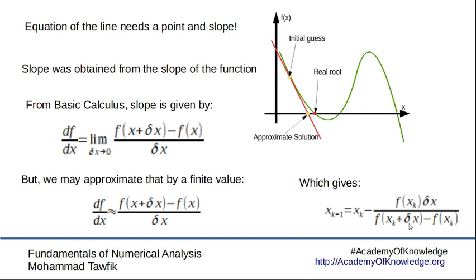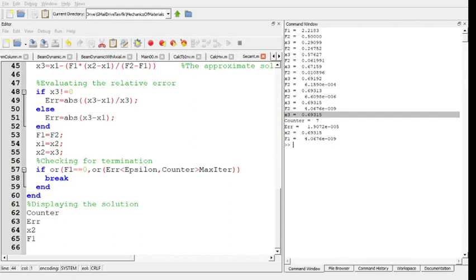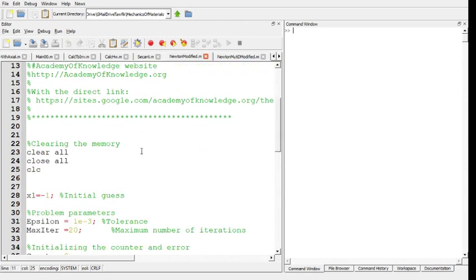We pay the price of getting an approximate value for the slope to avoid evaluation of the slope, which is in many practical problems impossible to find. So let's have a look right away now at the program to make things clear. Let's go to Octave. Let's go to modified Newton-Raphson method. Here you are.